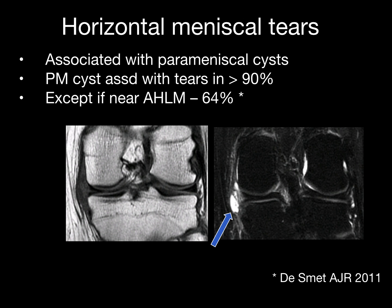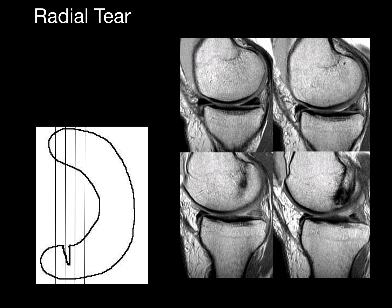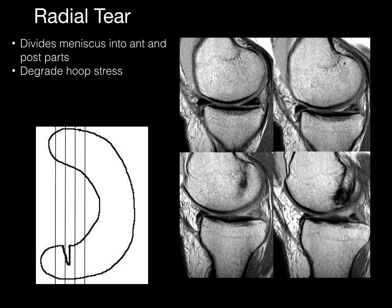There's an example of a parameniscal cyst. Radial tears divide the meniscus into anterior and posterior portions, degrade the hoop stress, and you may see the ghost meniscus. The upper image shows a normal appearing meniscus, the next shows some increased signal, the image with the arrow shows a ghost meniscus with absence of normal meniscal tissue, and the last image shows return of the meniscus. This is because the radial tear is only imaged on one sagittal section.